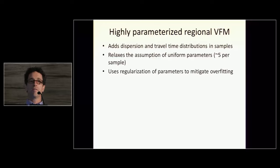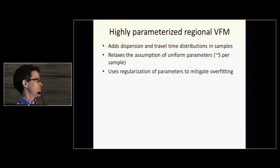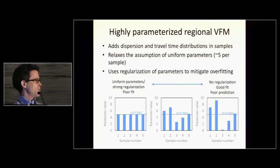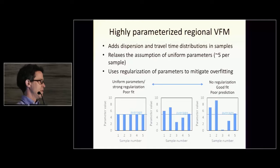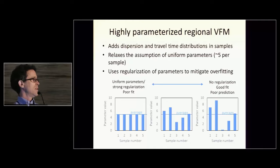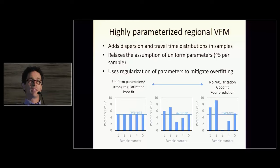What we've done is use regularization of parameters to avoid overfitting and to allow the model to converge. This is equivalent to a case where you have very strong regularization, meaning you're reducing the variance among your parameters for all of the samples. If it's very heavily regularized, you have the same value of the parameter at every well. At the opposite extreme, with no regularization, you'll get an excellent fit, but your predictions will probably not be very good because you're fitting the noise in the data. What we're shooting for is something in the middle.